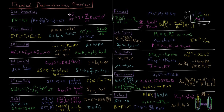We have more advanced equations of state like the virial equation of state, where the compressibility factor Z, which is PV-bar over RT, equals 1 (as it would be for the ideal gas equation), plus a Taylor series summing from i equals 1 up to infinity of the second virial coefficient times pressure plus third virial coefficient times pressure squared, and so on.